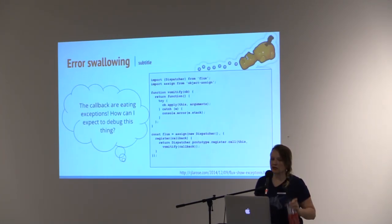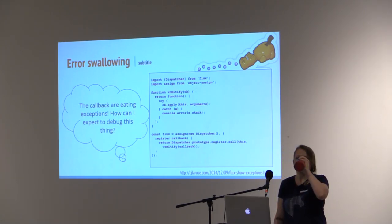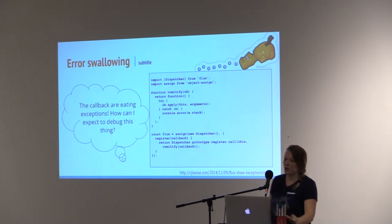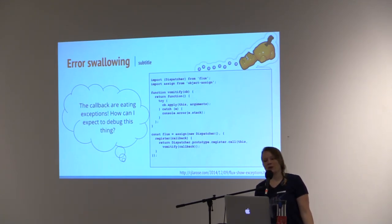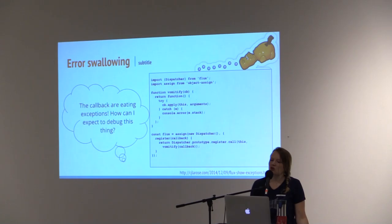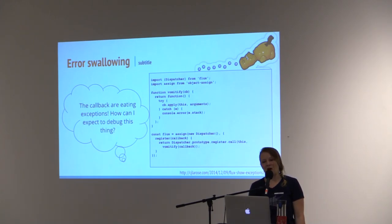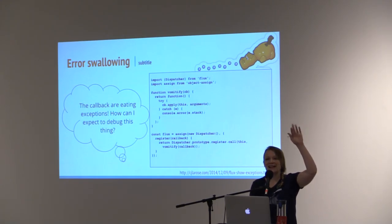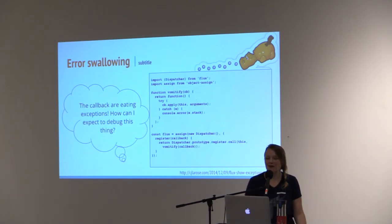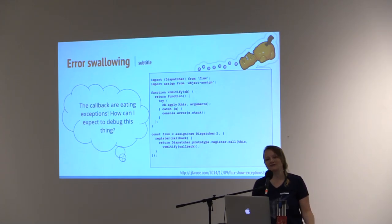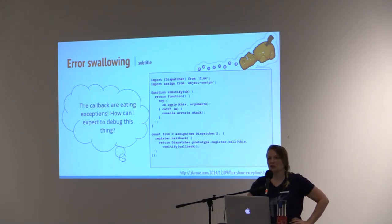Another issue that we ran into was error swallowing. We were having some problems with data not showing up, but we also weren't seeing any errors in the console. The dispatcher provided by Flux accepts callbacks with its register method and invokes those callbacks any time an action is dispatched. However, one problem we ran into is that it will eat any exception that occurs in a callback and just keep chugging along. Presumably, this is so that one failing callback doesn't cause the whole application to blow up.